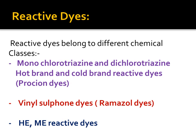Reactive dyes belong to different chemical classes. The important classes include monochlorotriazine and dichlorotriazine based dyes, also known as hot brand and cold brand reactive dyes. Commercially they are known as Procion dyes. Another type used for printing is vinyl sulfone dyes, commercially known as Remazol dyes. And then bifunctional dyes like HEME type reactive dyes, which is high exhaustion mild exhaustion type.